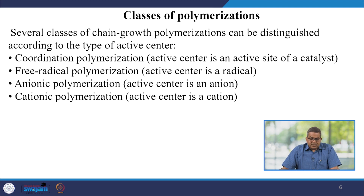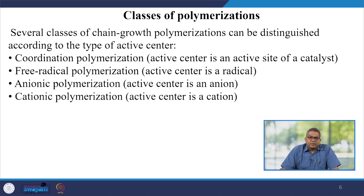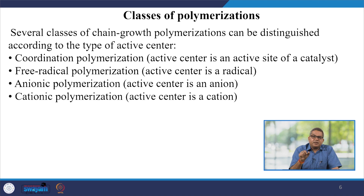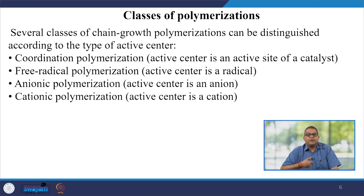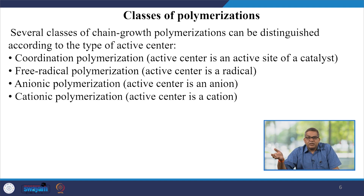Several classes of chain growth polymerization can be distinguished according to the type of active center. Sometimes active centers are referred to as a functional group; sometimes other aspects like coordination polymerization — where the active center is an active site of a catalyst — trigger the polymerization process. In free radical polymerization, the essential active part is the radical, meaning you need to have a free radical in the reaction mass to propagate the polymerization reactions. Similarly, in anionic polymerization, the active center is an anion.